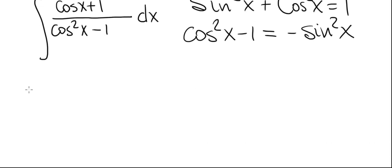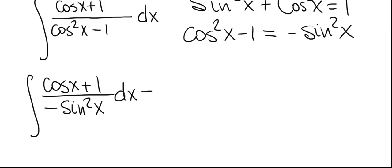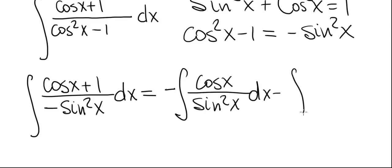So now we'll replace the denominator with that and the integral now looks like cosine x plus 1 in the numerator, minus sine squared x in the denominator. We'll separate this into two integrals. The first one is minus the integral of cosine of x over sine squared x and the second one is minus the integral of 1 divided by sine squared of x.